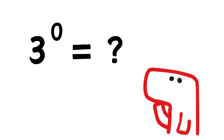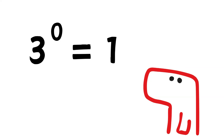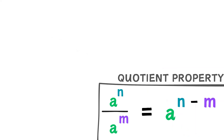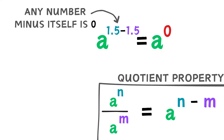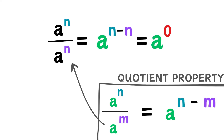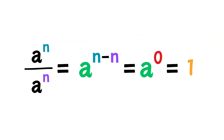Here's a question: what would something raised to the power of 0 equal? How can we multiply a number 0 times? That's not possible. Anything raised to the power of 0 is 1. We can apply the quotient property to see why — anything to the power of 0 is the same as dividing that number by itself, which we know is 1.